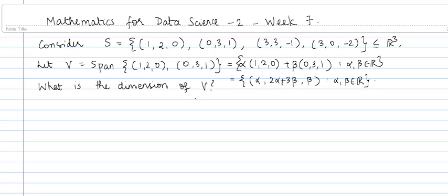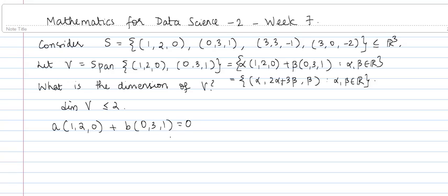Now we need to find the dimension of V. One thing we already know is that V is spanned by 2 vectors, so the dimension of V is less than or equal to 2. If these 2 vectors are linearly independent, then the dimension of V is going to be equal to 2. Let us see if these 2 vectors are linearly independent or not. For that we need to consider the equation: A times the first vector plus B times the second vector is equal to 0. If we get A = B = 0, then these 2 vectors are linearly independent.